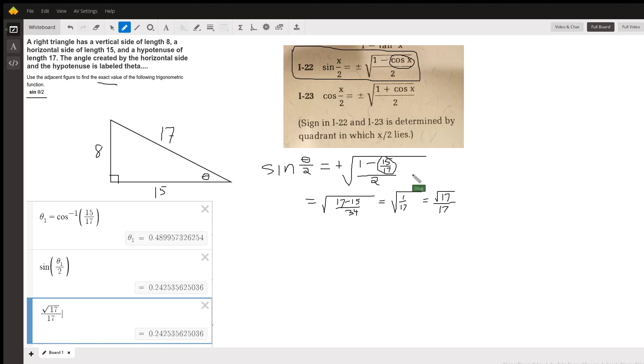Now to simplify it, I would do this. I would just multiply top and bottom of the bottom of the big fraction, this complex fraction by 17. 17 times 1 is 17. 17 times 15/17 is 15. And 17 times 2 in the denominator is 34.